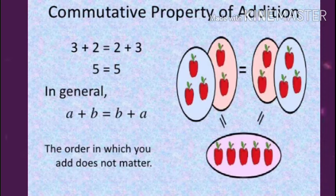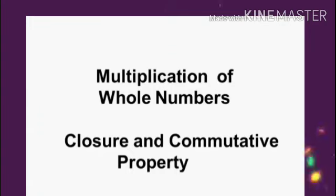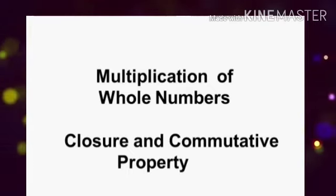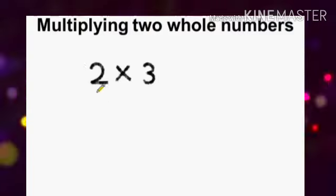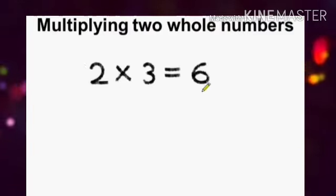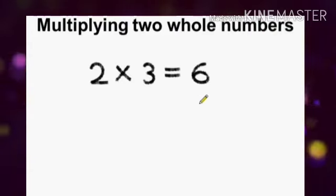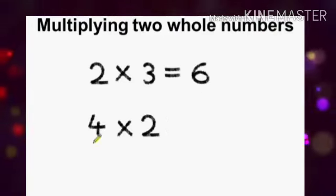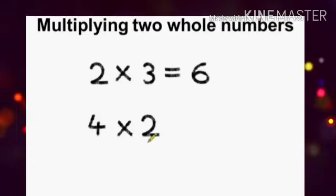You will be amazed to know that this is true for multiplication as well. Now we will learn multiplication of whole numbers and the closure and commutative property. Multiplying two whole numbers: 2 into 3 is equal to 6, and 4 into 2 is equal to 8.